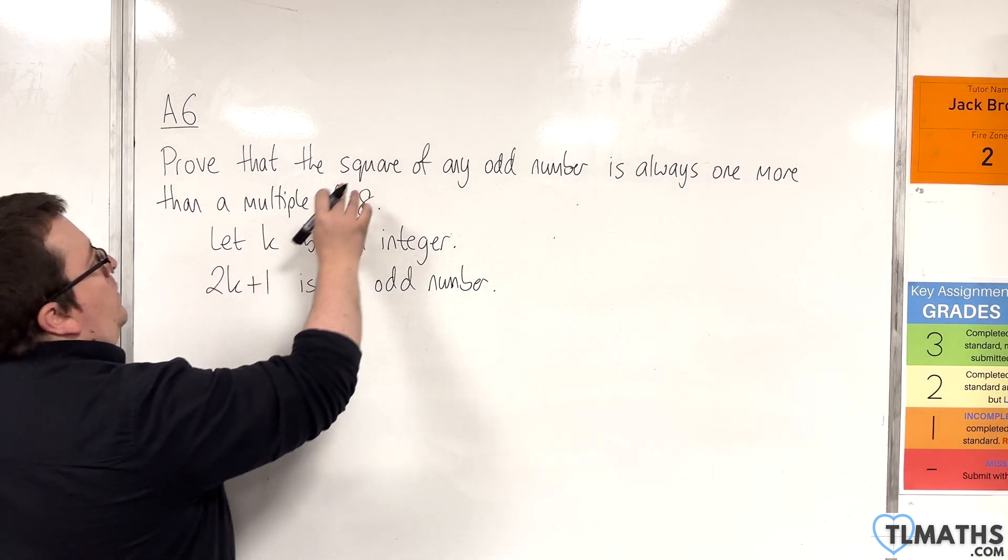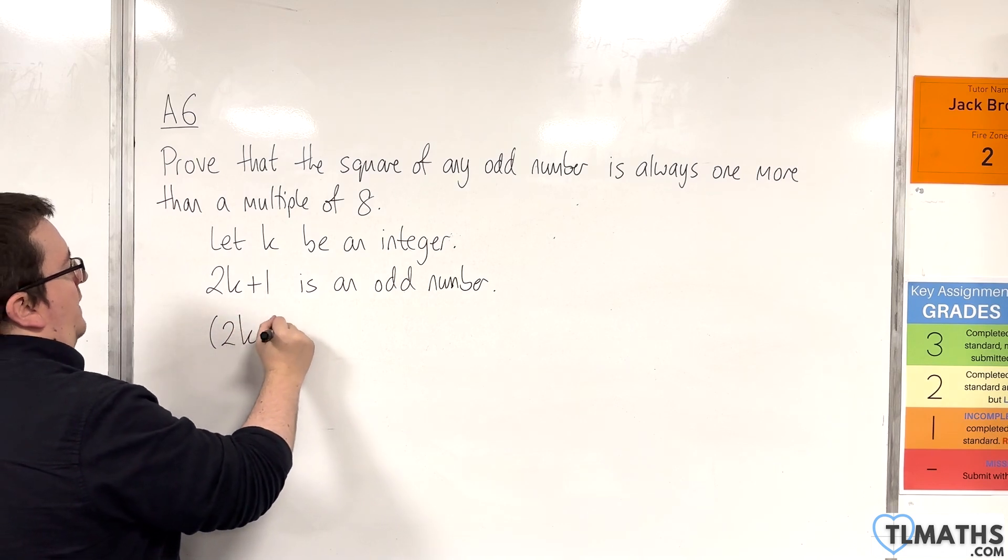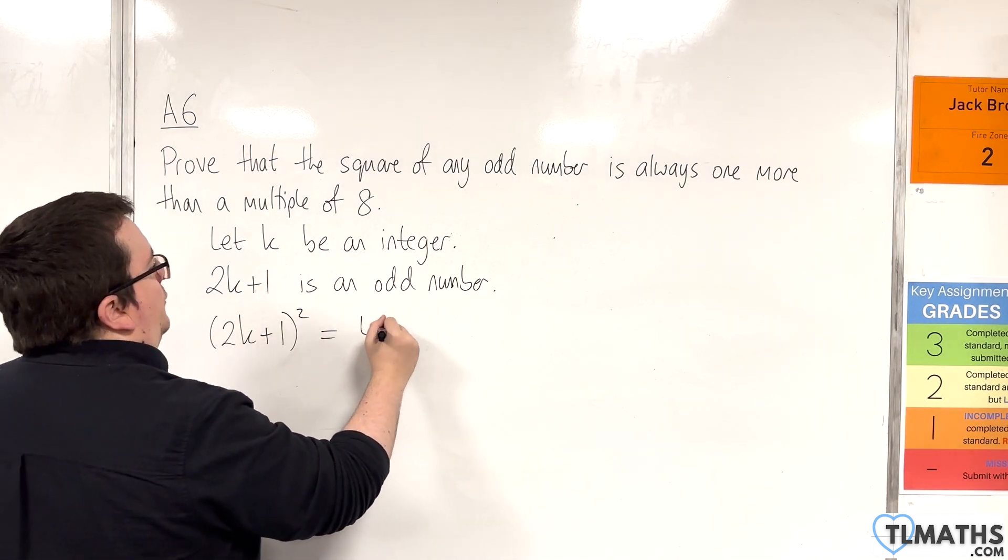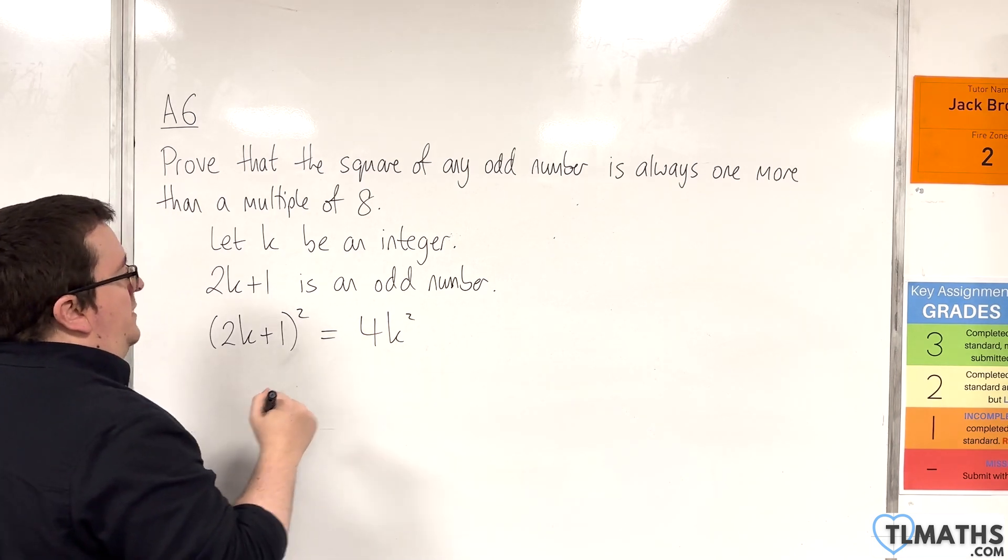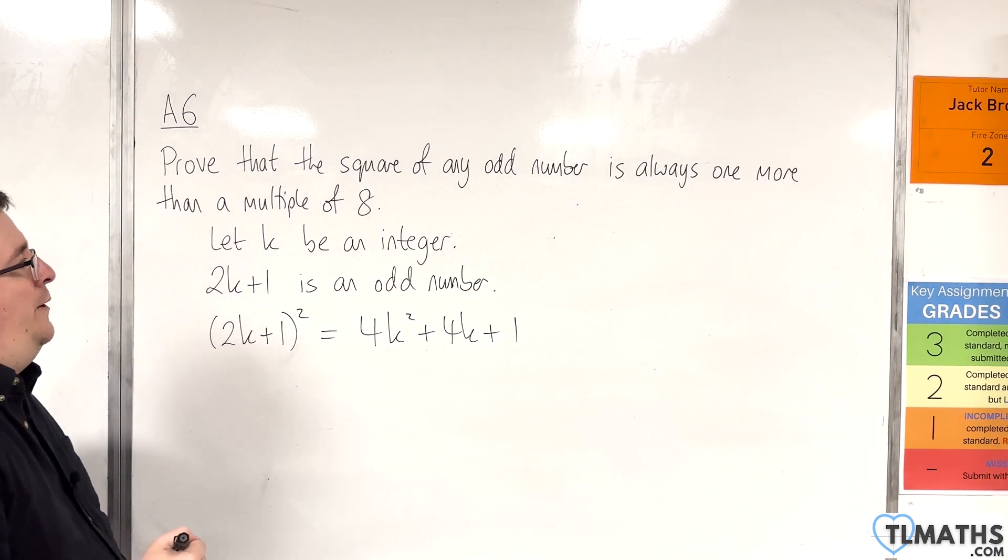Now we're going to square the odd number. So squaring that we're going to get (2k + 1)² = 4k² + 4k + 1 when we expand the brackets out.